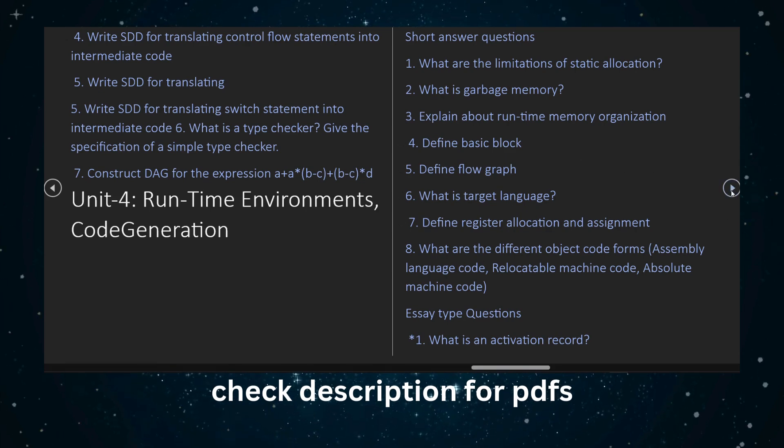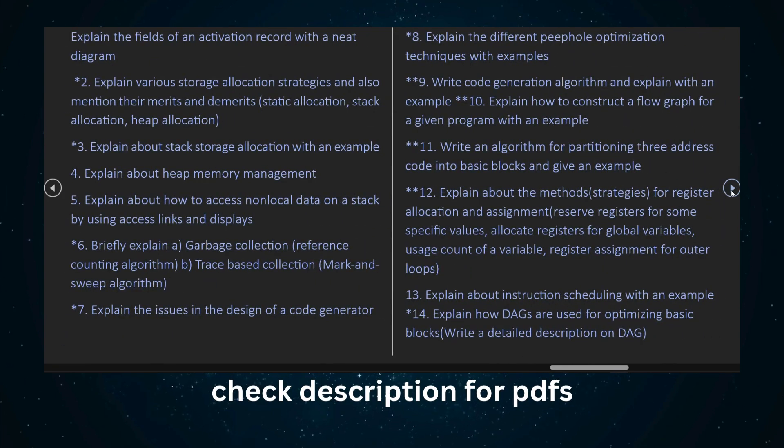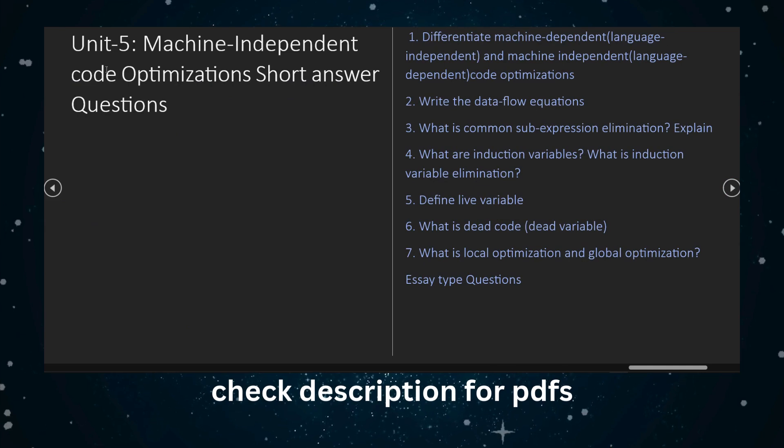Unit 5 - Machine Independent Code Optimization - has short answer questions and long answer questions.